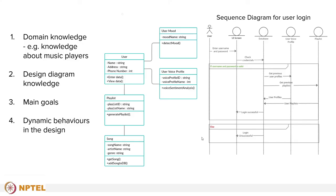One also requires knowledge about the dynamic behaviors in the design. When expert designers see a set of design diagrams, they think about the dynamic behaviors. This involves knowledge about how data members in the class diagram change based on the execution of the sequence diagram. For example, when the login is successful, a user's profile and playlists are fetched from the database and corresponding values of the user profile should be updated.